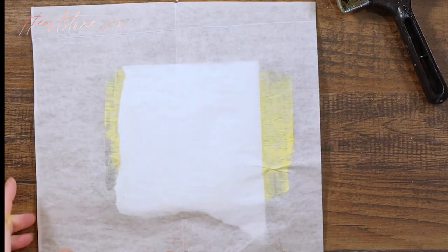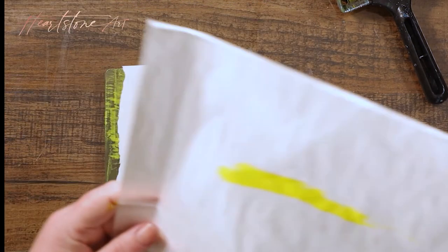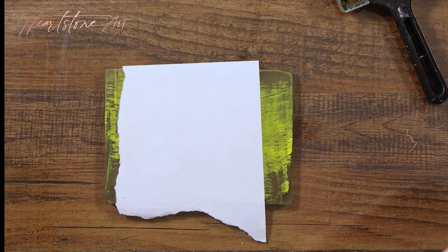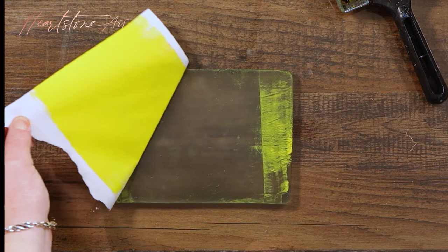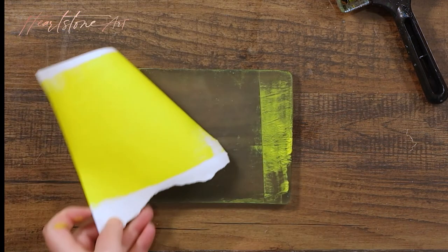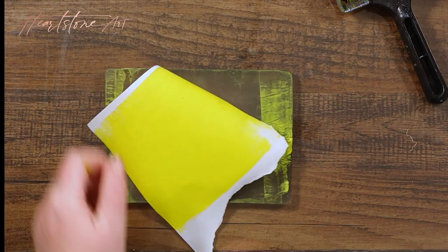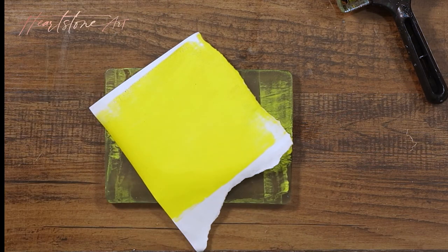You can see I've got a really clean pull from this plate. It was absolutely filthy before, but the paint is coming out beautifully. So if you're having a problem with the paper sticking to your gel plate, you may just need to clean it.